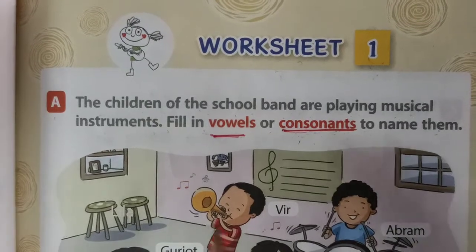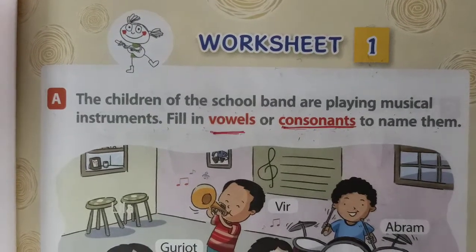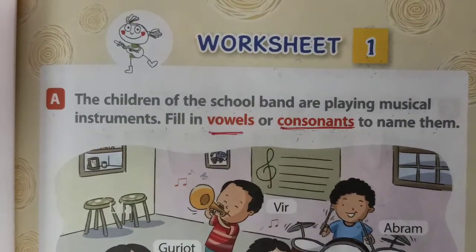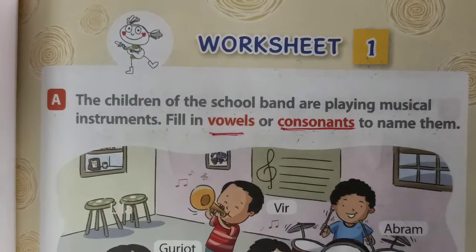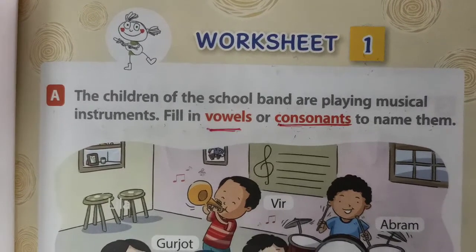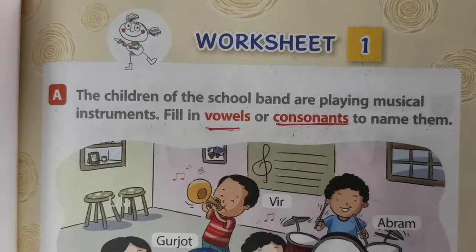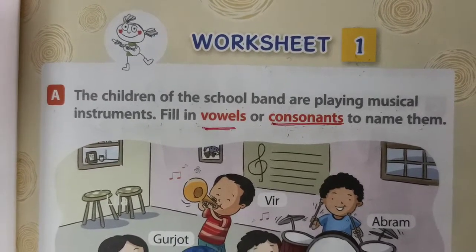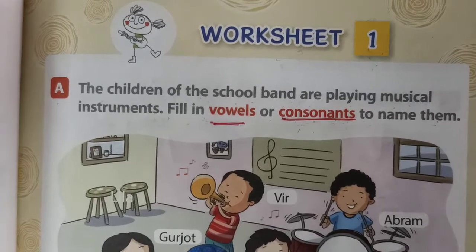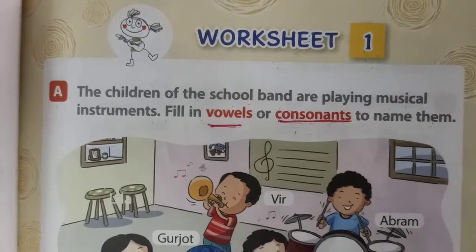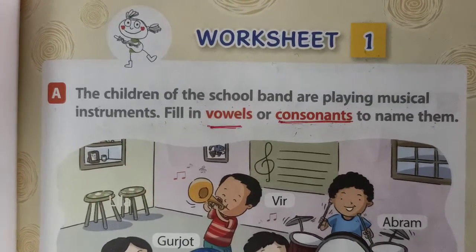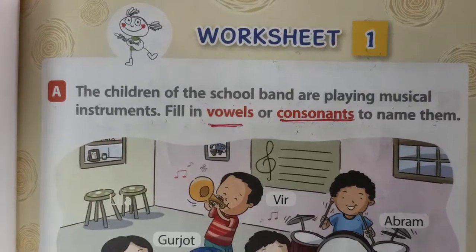See vowels. What are vowels? A, E, I, O, U are called vowels. Others letters are consonants.